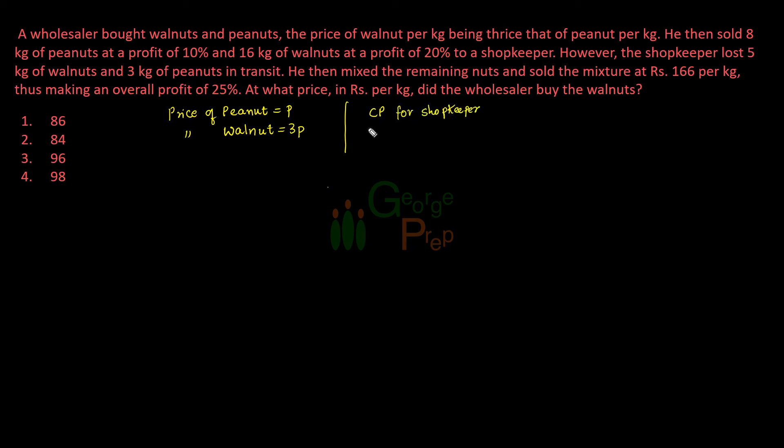If we write cost price for shopkeeper, for walnut that will be 3P plus 20% of 3P, or we can directly write 1.2 times 3P. This is for 1 kg, for 16 kg it will be times 16. Similarly, if we write for peanuts, it will be P plus 10% of P, or 1.1P. That is for 1 kg, and for 8 kg that will be times 8.